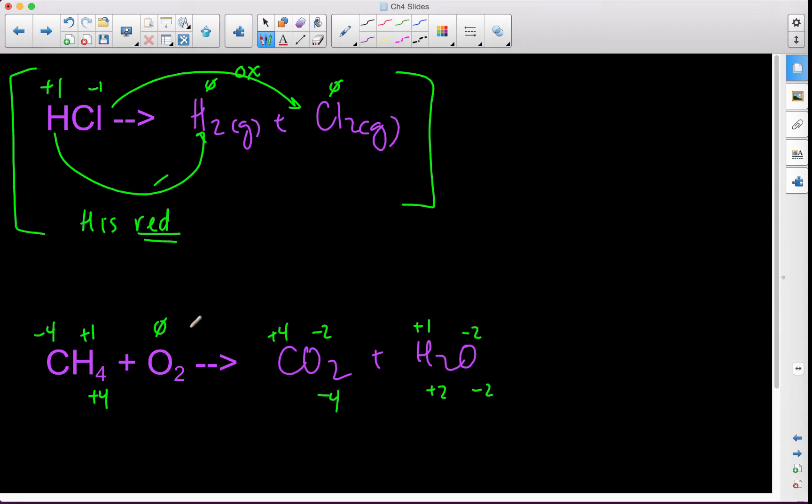So if we take a look at this, we can see that oxygen goes from zero to negative two, so we could say that oxygen is reduced, and we could say that carbon is oxidized. Making this, overall, a redox reaction.